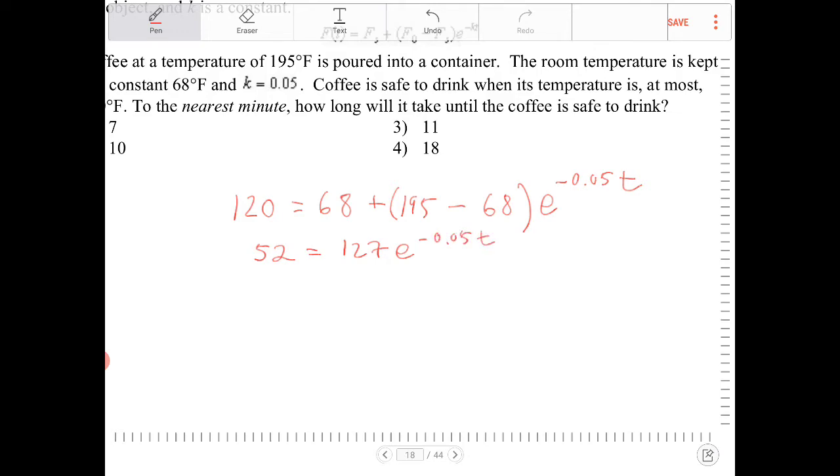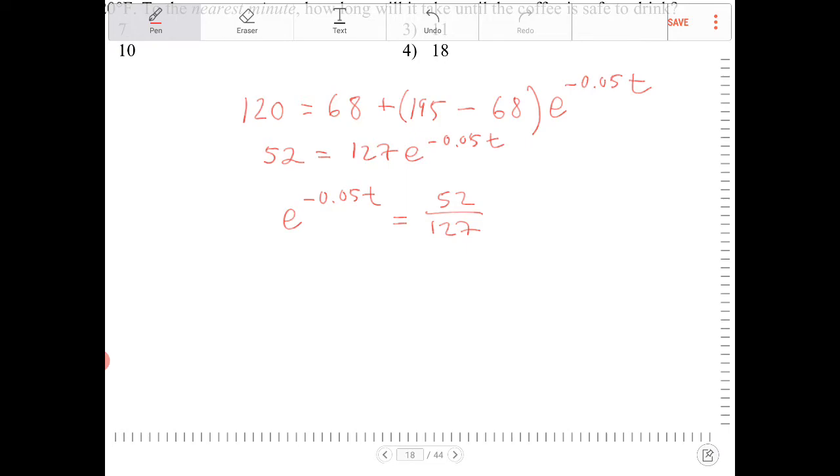All right, and then we're going to divide both sides by 127. So I have e to the negative 0.05t is equal to 52 over 127. And what we're going to do is we're going to take the natural log of both sides. Because we're dealing with base e here, it just makes sense to work with natural log.